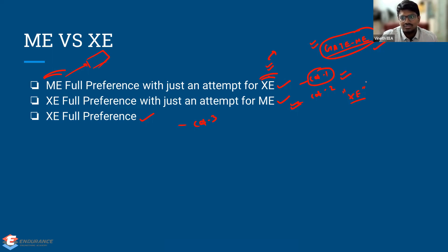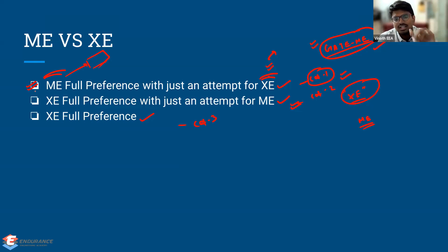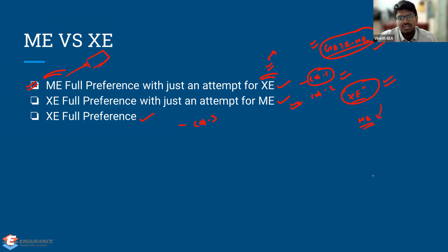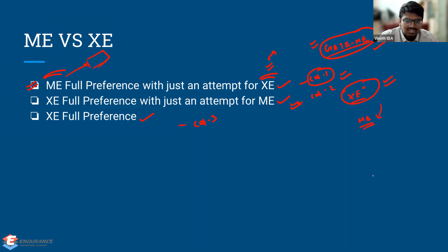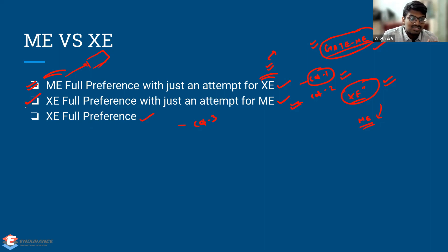Focus all your preparation on XC — XC syllabus coverage, XC test series, XC question bank, everything XC-focused. Then give GATE ME just an attempt. Similar to category one where students keep ME as complete preference and XC as a part, here it's the reverse: do XC completely and give ME as a part. Category one students prepared for ME properly; category two students started ME but couldn't follow the schedule and feel they can't complete the syllabus in time, so switch full focus to XC.